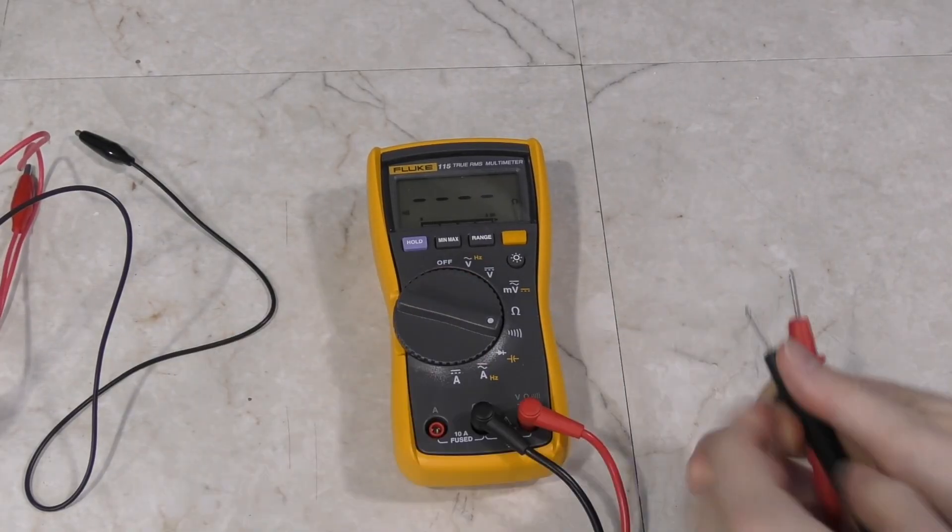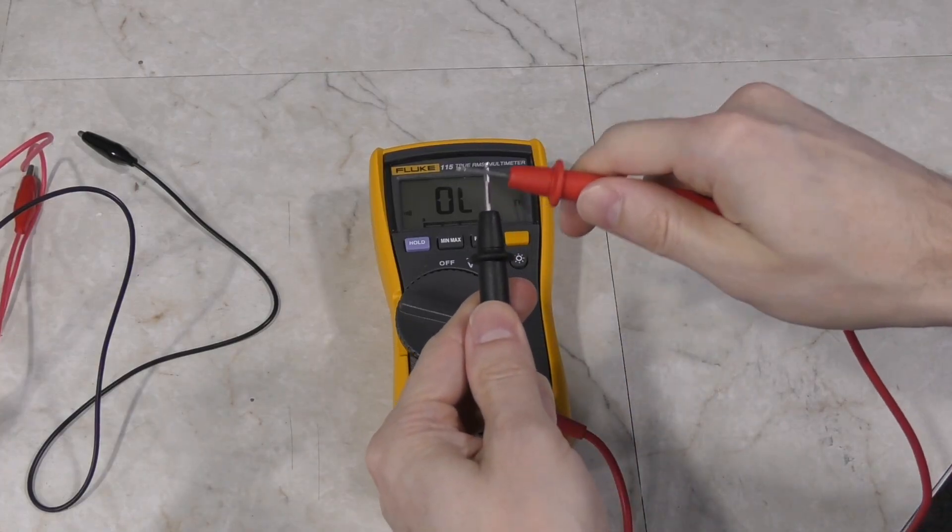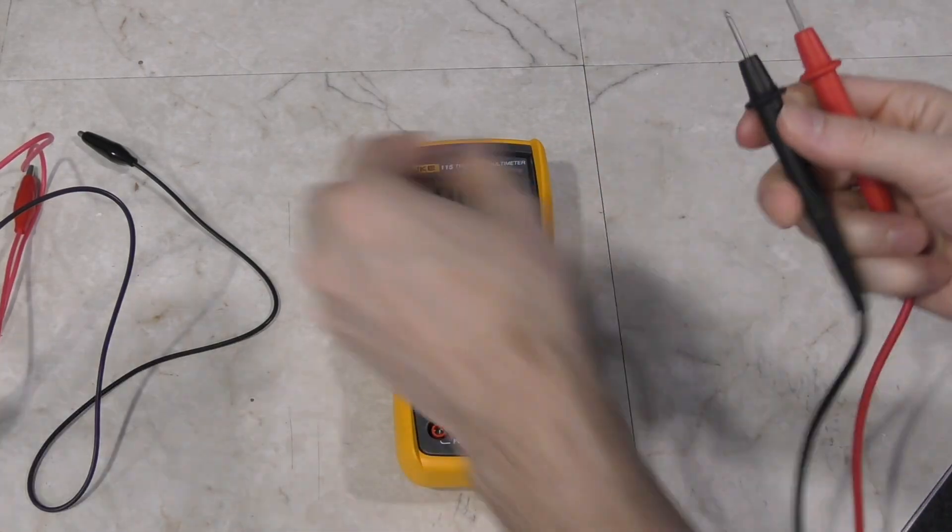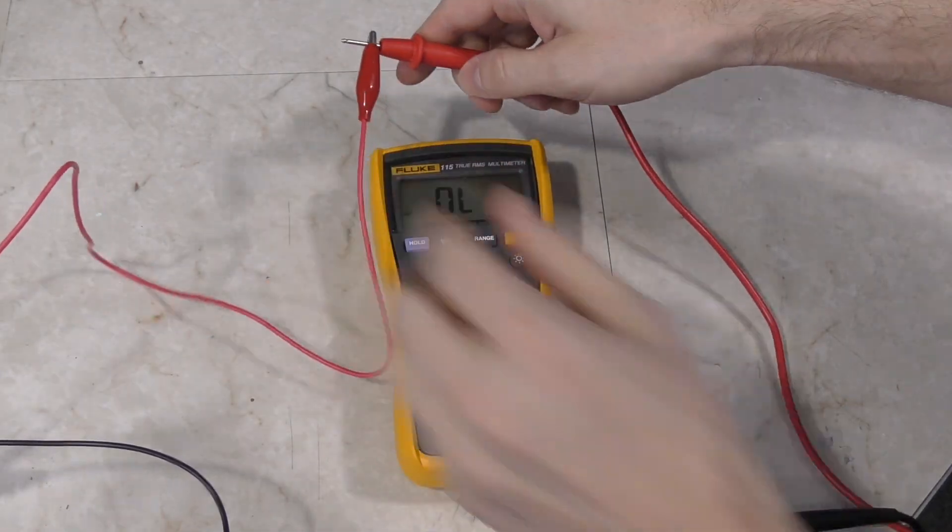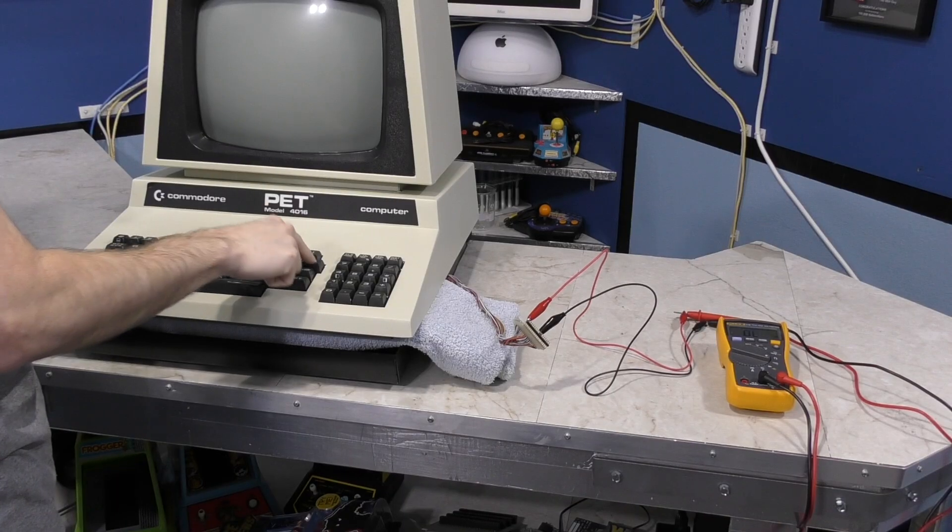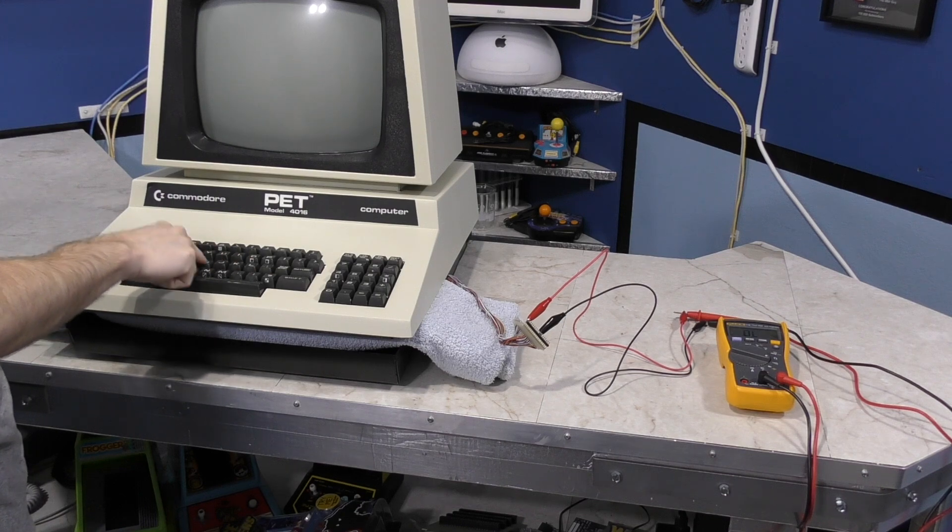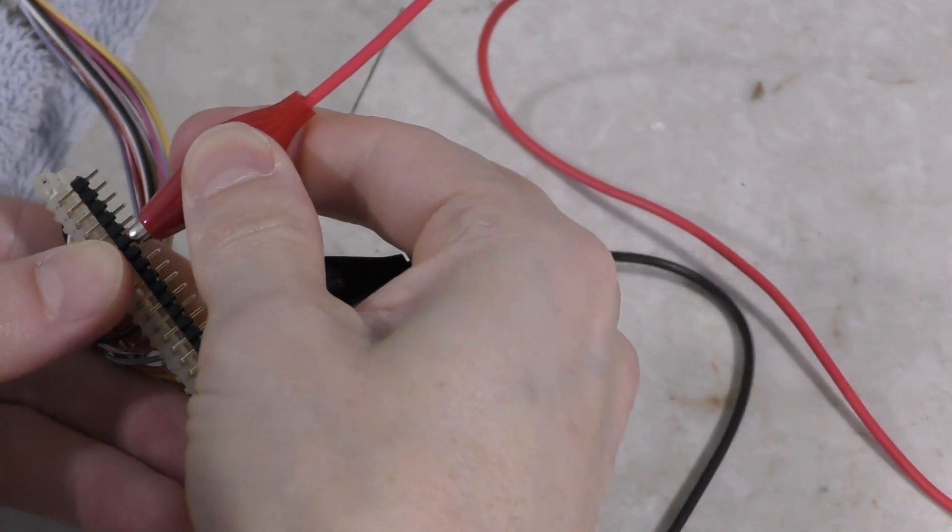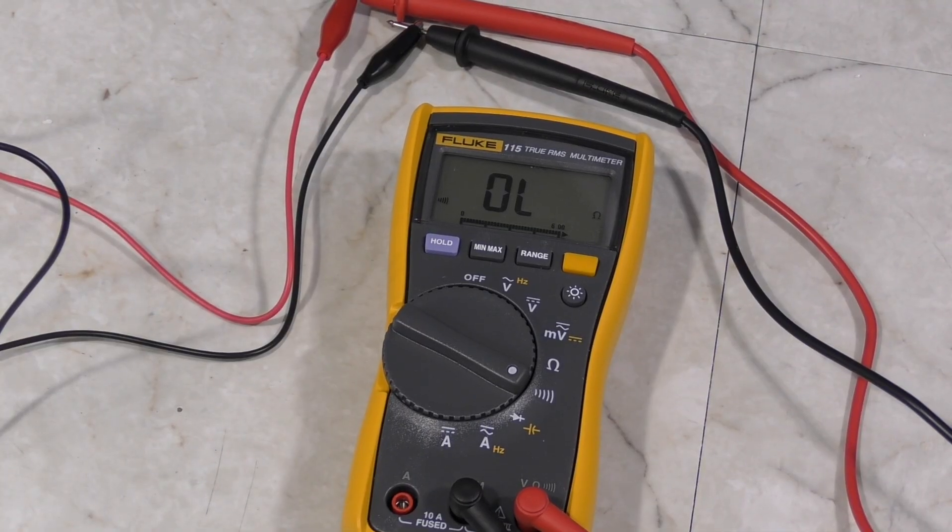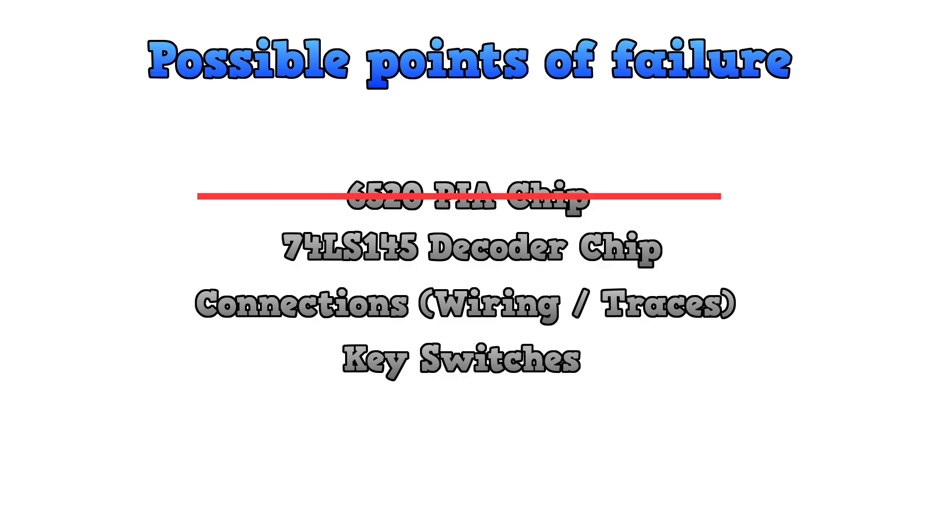I set my multimeter on continuity mode so that I could hear if there was any connection made. Then I connected it to the alligator clips like this. I then proceeded to press every single key on the keyboard, but I never heard any beep. I tried other areas on the connector and repeated the test, but found nothing. So, there's definitely some problem with the keyboard.